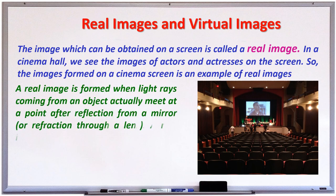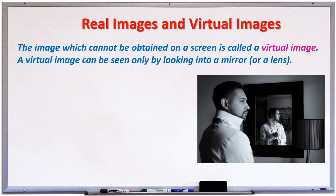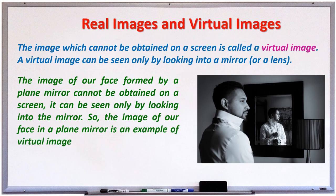A real image is formed when light rays coming from an object actually meet at a point after reflection from a mirror. A real image can be formed on a screen because light rays actually pass through the real image. Whereas the image which cannot be obtained on a screen is called a virtual image. A virtual image can be seen only by looking into a mirror or a lens. Remember children, a virtual image is just an illusion.